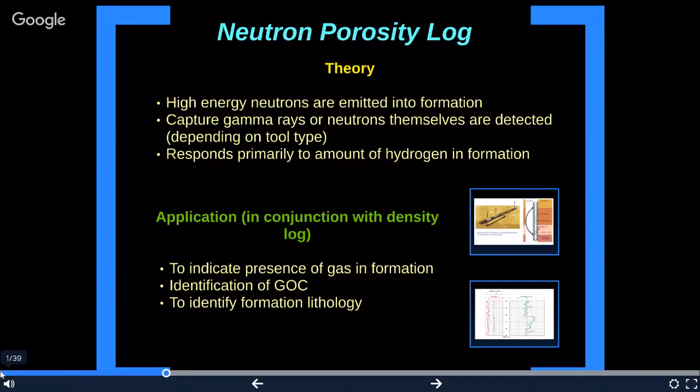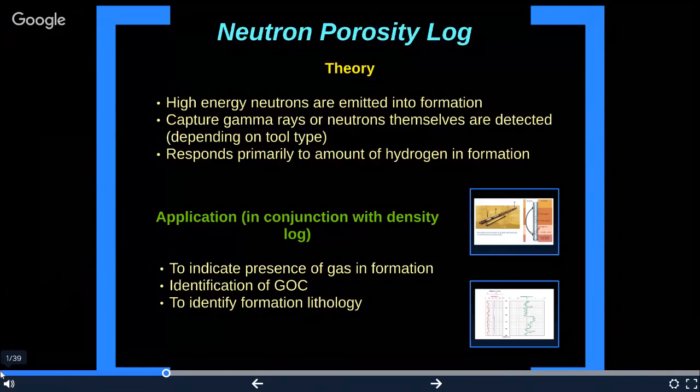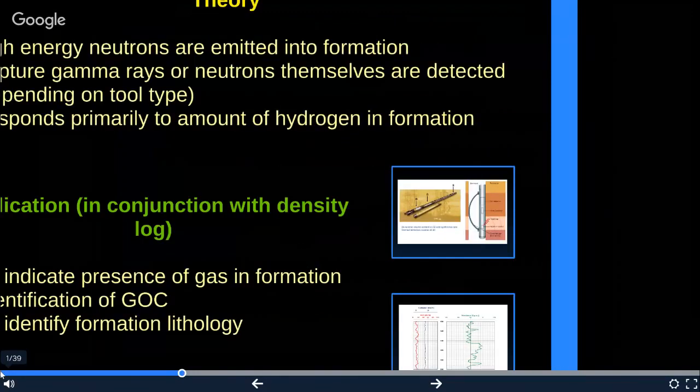Applications are to indicate presence of gas in the formation, identification of gas-oil contact, and to identify formation lithology. Neutron logging tools include the GNT tool series, the SNP sidewall neutron porosity tool, and the CNL, which is compensated neutron and dual porosity logs.